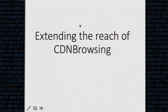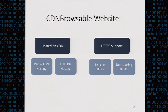In the second part of the talk, I analyze what fraction of popular websites are actually CDN-browsable and whether we can extend CDN browsing to websites not fully hosted on CDNs. To be CDN-browsable, a website must have two properties: it must be hosted on a CDN, and it must support HTTPS to avoid DPI attacks. There are two hosting modes: partial CDN hosting, where only static files are on a CDN while dynamic content comes from the website's own servers, which isn't sufficient for CDN browsing; and full CDN hosting, where all access goes through CDN edge servers, which is what we want.